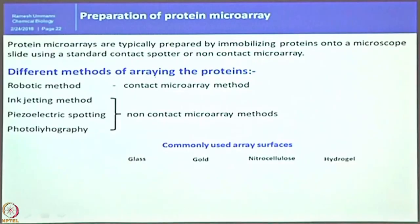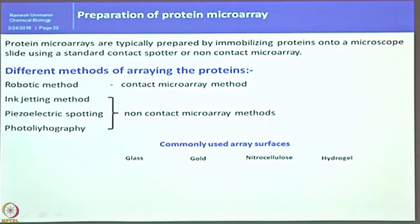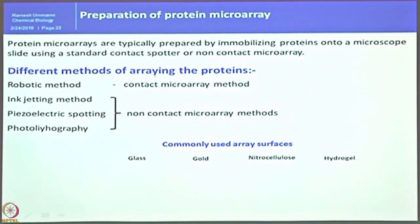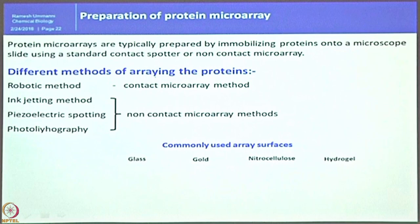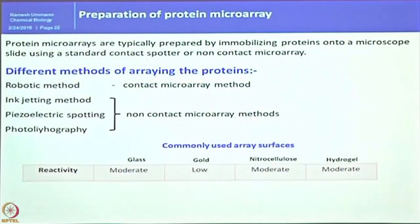Next is the preparation of protein microarrays. It is important to understand how to print. Protein microarrays are typically prepared by immobilizing proteins onto a microscope slide using a standard contact or non-contact spotter. In the robotic contact microarray method, a needle touches the membrane and disperses liquid into a small area, accommodating a larger quantity of sample in a small spot. The three non-contact methods are inkjet, piezoelectric spotting, and photolithography.